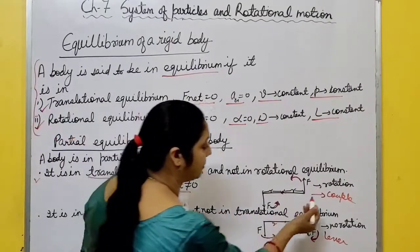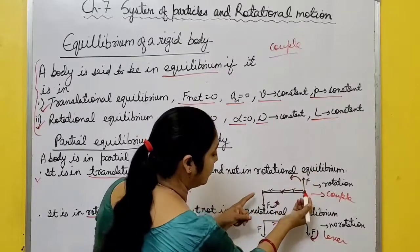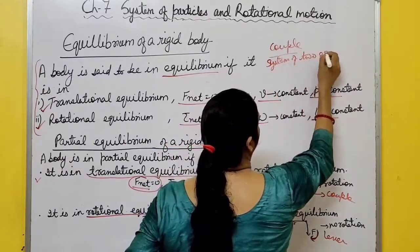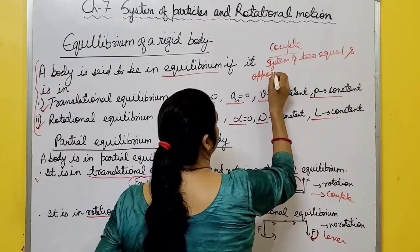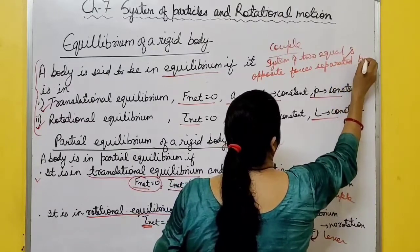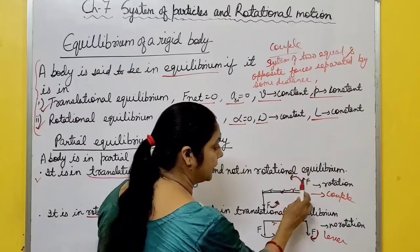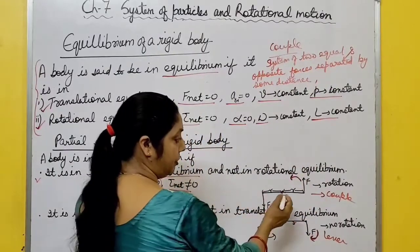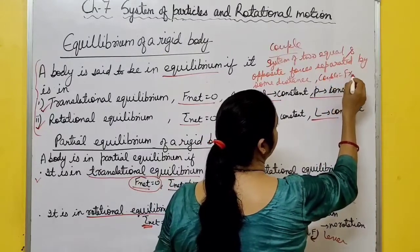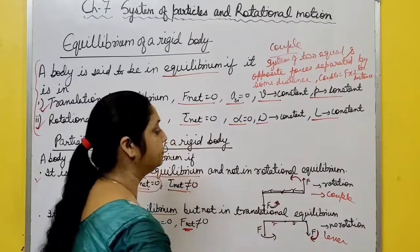A couple is a system of two equal and opposite forces separated by some distance. The formula for a couple is: torque = force × perpendicular distance between the two forces = F × 2r. Both torques add up in the same direction forming the couple. The best example for a couple is opening a bottle cap.